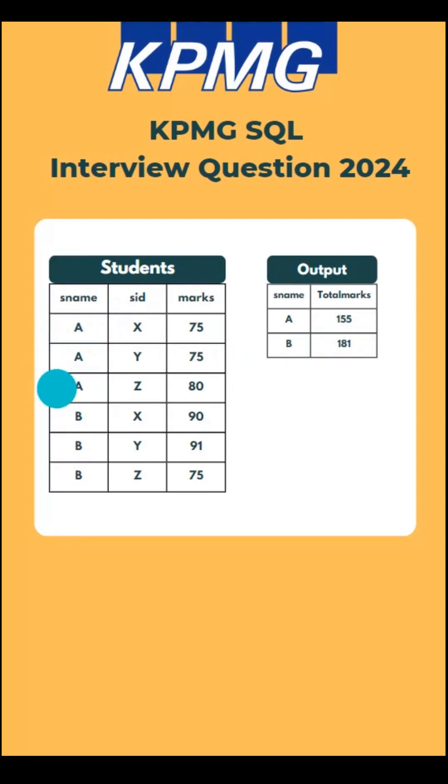Now if you check for student A, we have 3 marks. The top 2 marks are 80 and 75. The tricky part here is the third highest mark is also 75, but we need to take only the top 2, even though the third mark is the same. So 80 plus 75 for student A equals 155 total.